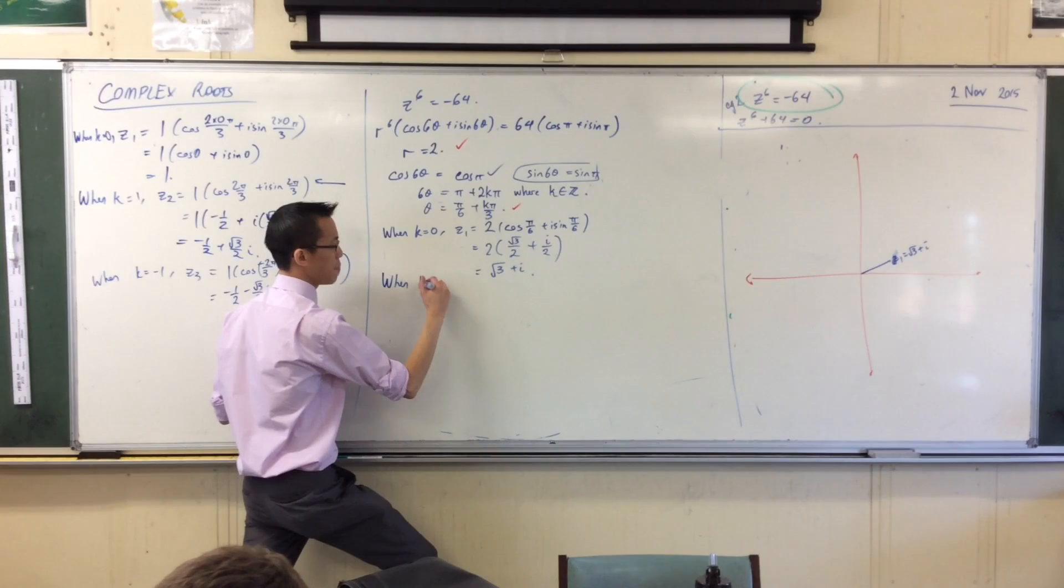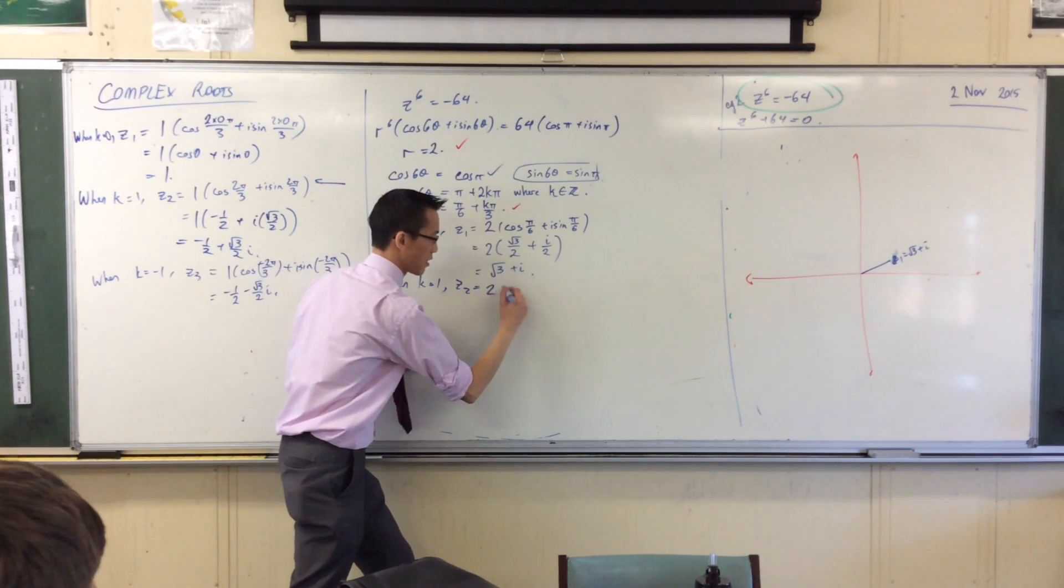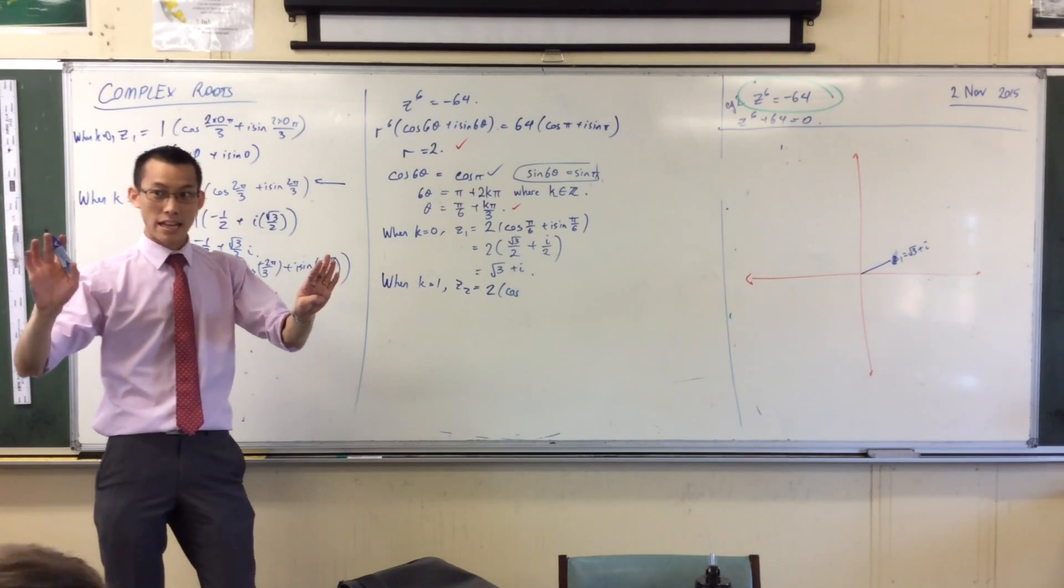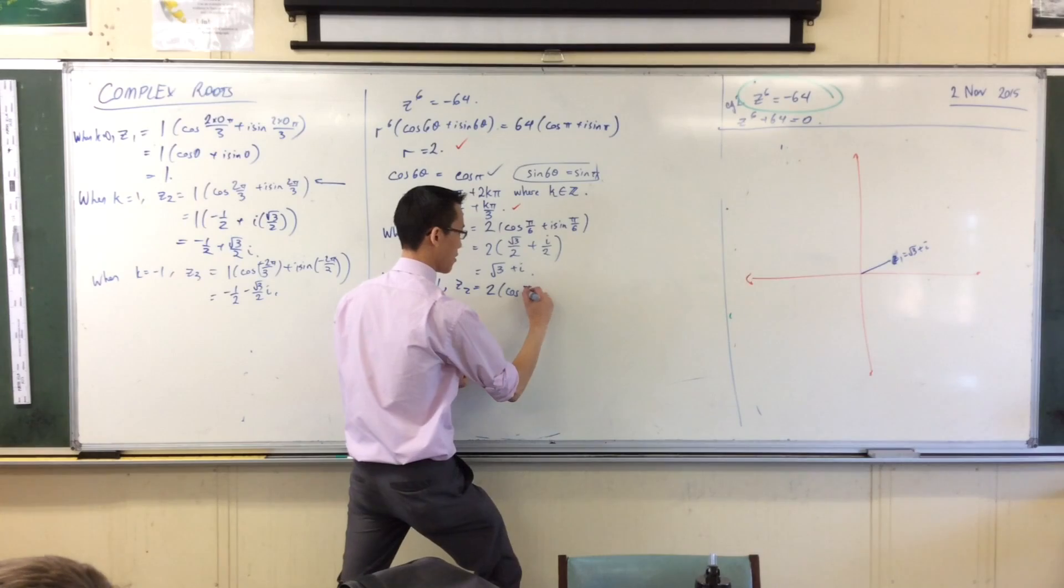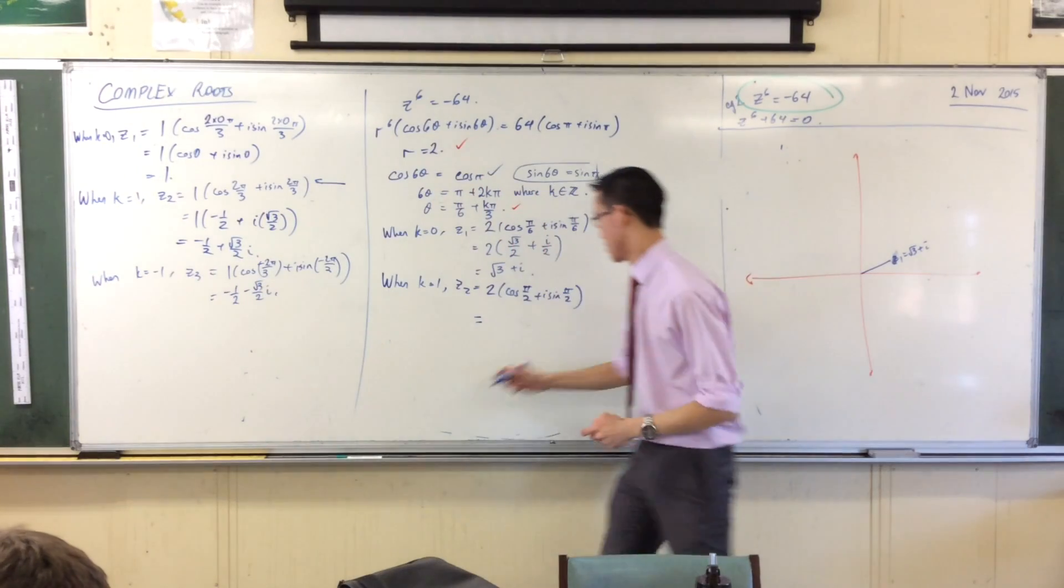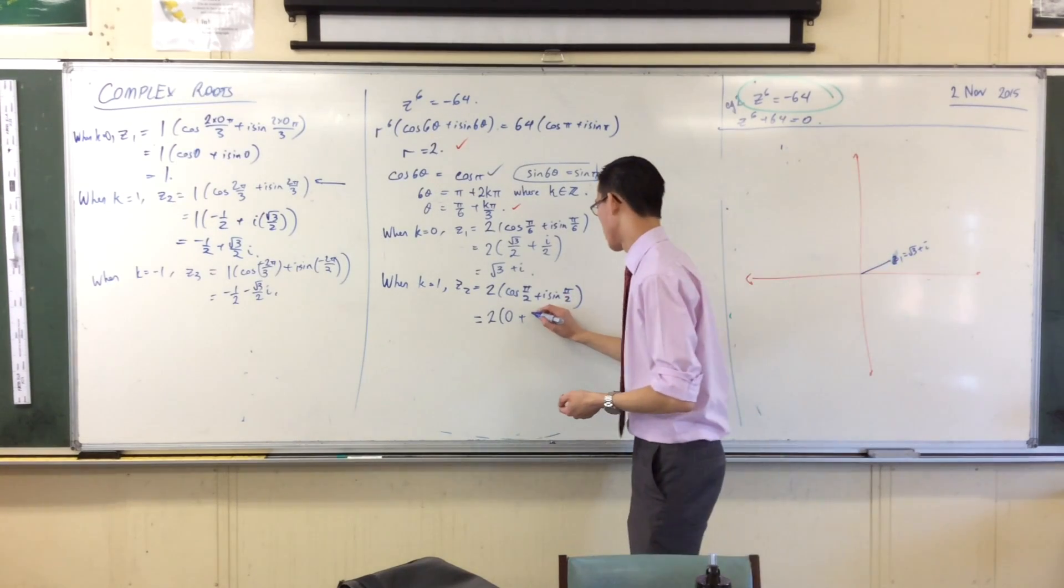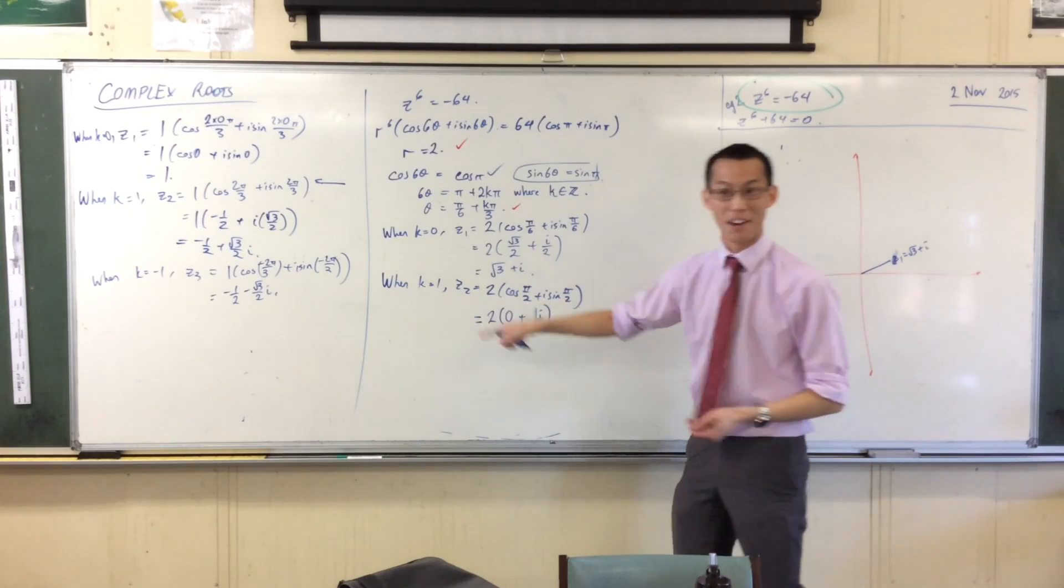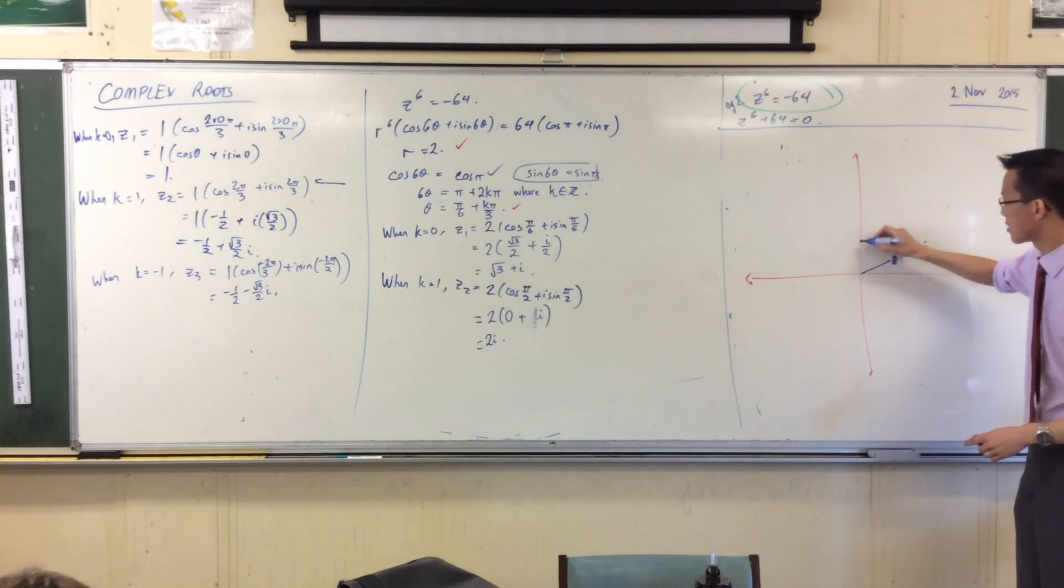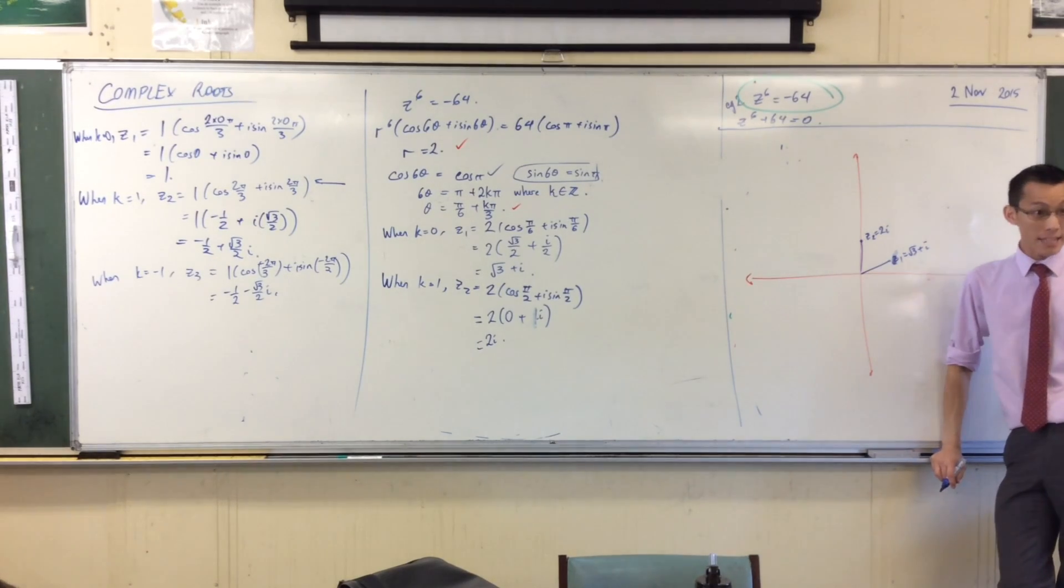Let's try the next value. K equals 1. That'll give me a new complex root, z2. I've got my modulus at the front. Cos of pi on 6 plus pi on 3. That's 3 pi on 6, which is pi on 2. Cos pi on 2 of course is 0, plus sine pi on 2. 2 sine pi on 2 is just 1. So that's 2i. 2i. Where's 2i? 2i's the same distance from the origin as z1. There's my z2, 2i.